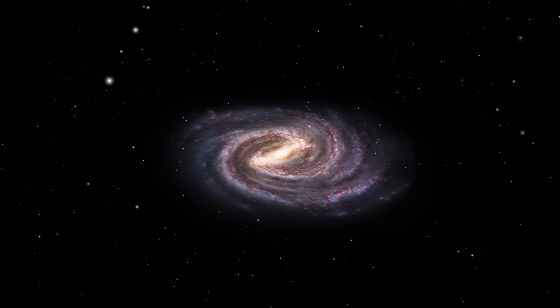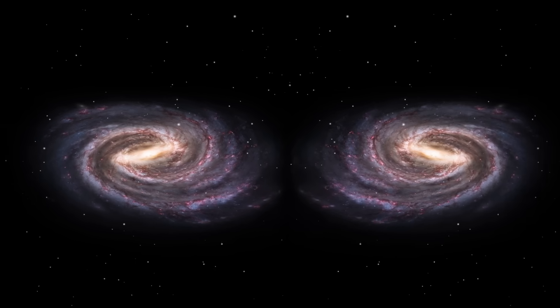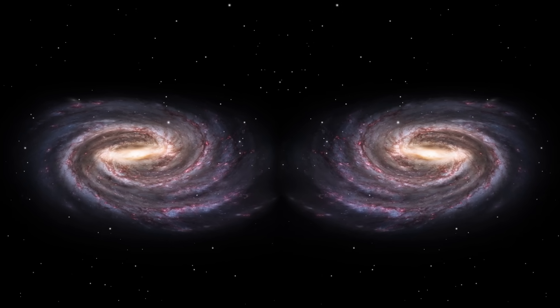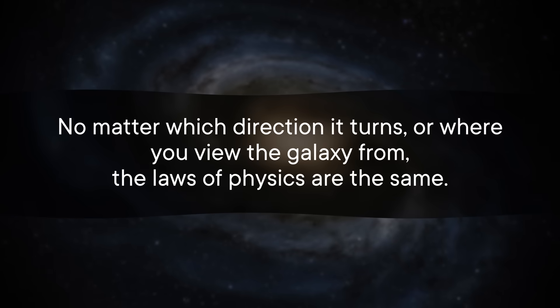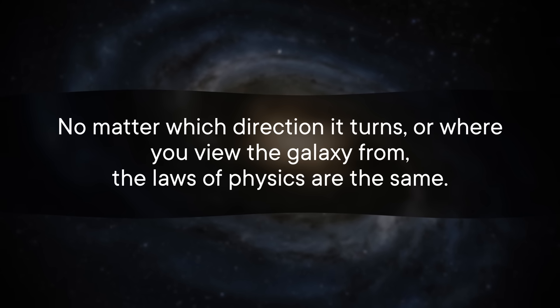An important lesson we learn as kids is how to tell our right from our left. But as far as many of the laws of physics are concerned, it's a meaningless distinction. After all, right and left are just mirror images of each other. A spiral galaxy looks like it's turning in a specific direction, but if you look at the galaxy from below, its rotation would appear to be a mirror image — all you did was change your perspective.